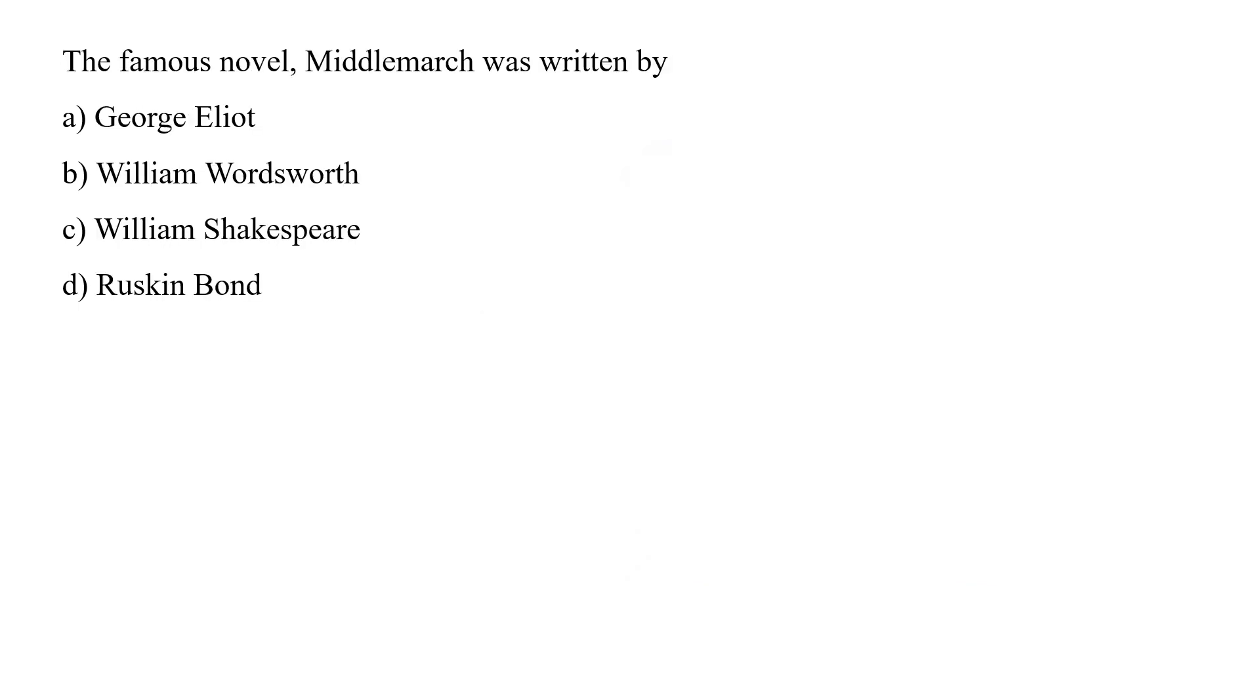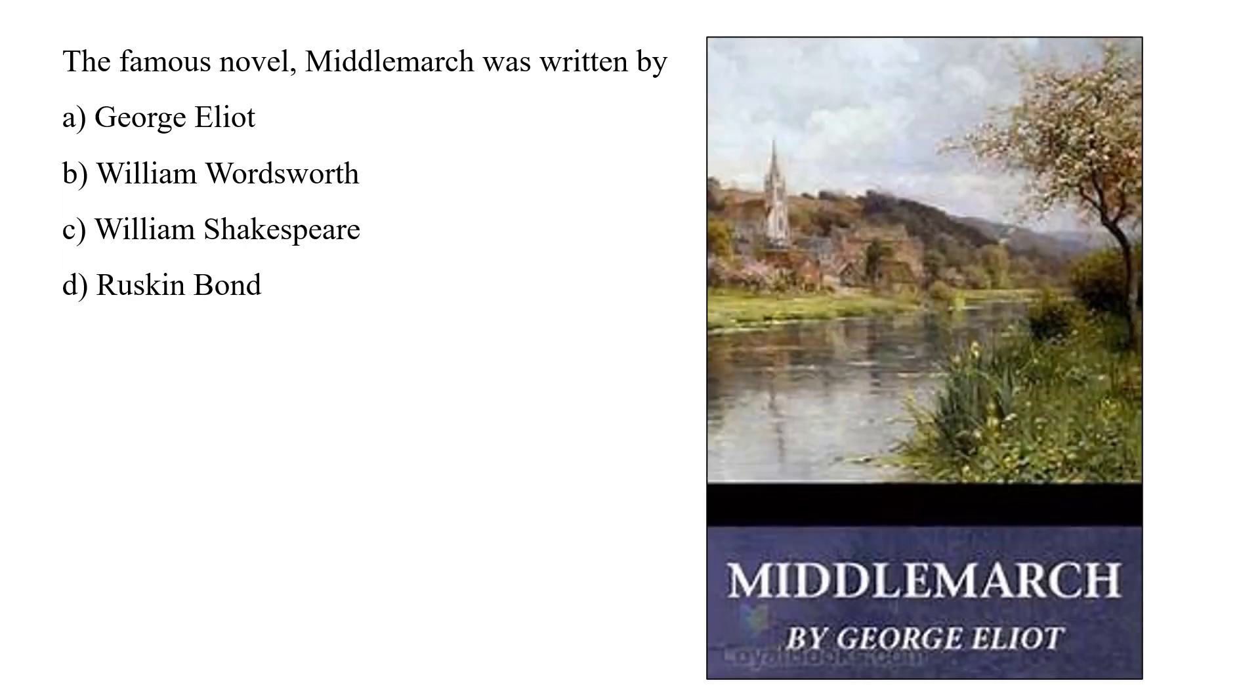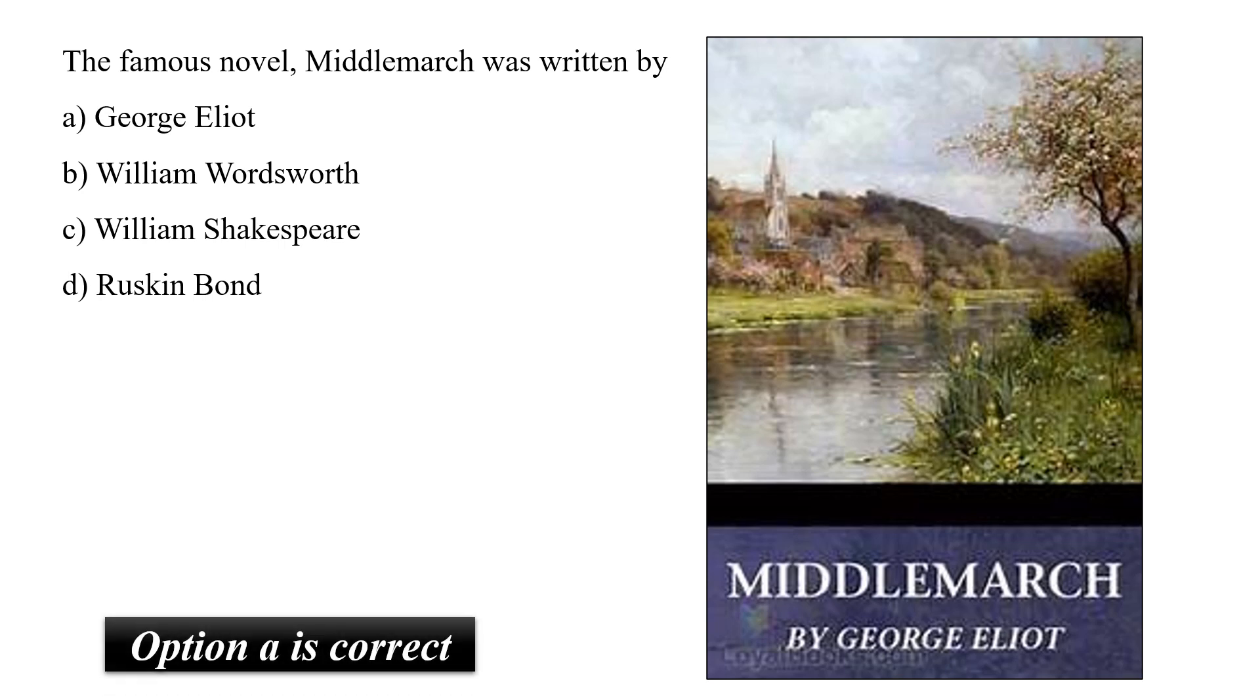The famous novel Middlemarch was written by George Eliot, William Wordsworth, William Shakespeare or Ruskin Bond? Middlemarch, A Study of Provincial Life is a novel which was written by an English poet George Eliot which was published in 1871 to 1872. So option A would be the correct answer.